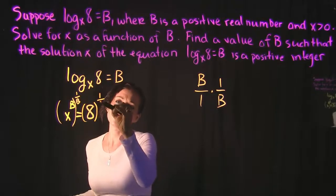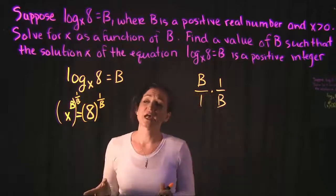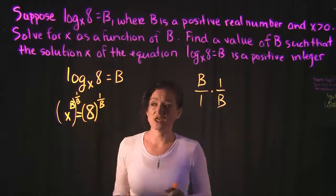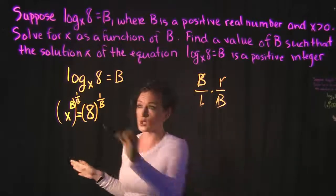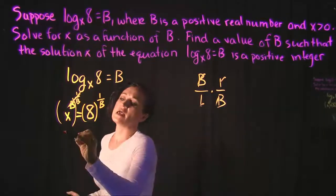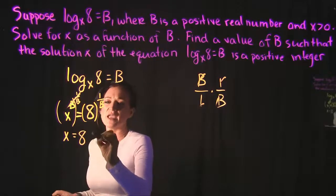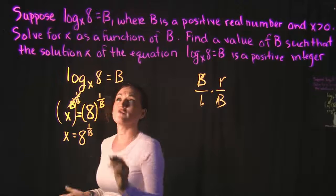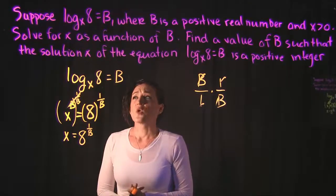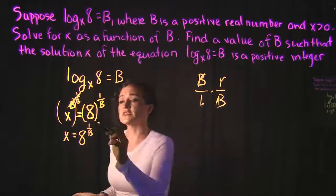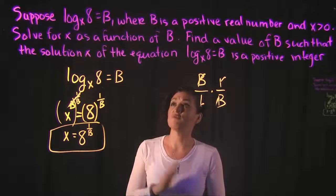If I raise the left-hand side to the 1 over b power, I need to raise the right-hand side to the 1 over b power as well. On the left side, b times 1 over b cancels and goes away, leaving us with just x. On the right-hand side, we have 8 raised to the 1 over b. So when they say solve for x as a function of b, this is what they're looking for: x equals 8 to the 1 over b.